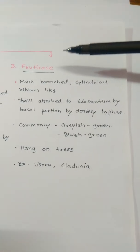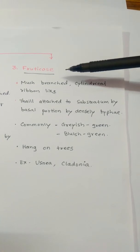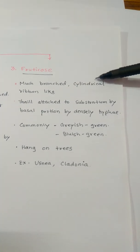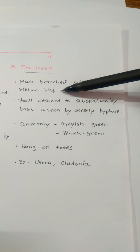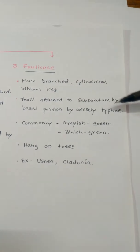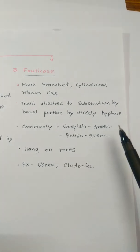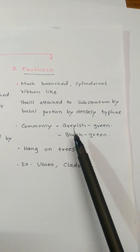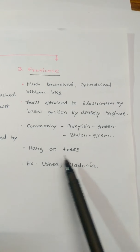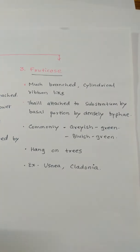The third type is Fruticose Lichens. Fruticose Lichens have a much-branched, cylindrical, ribbon-like structure. The thallus is attached to the substratum by the basal portion of densely arranged hyphae. They are commonly grayish-green or bluish-green in color and hang on trees. Examples: Usnea and Cladonia.